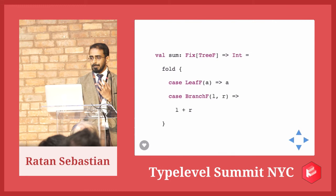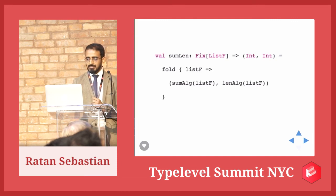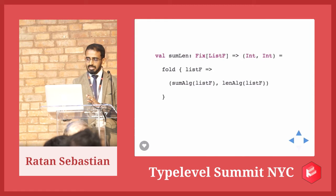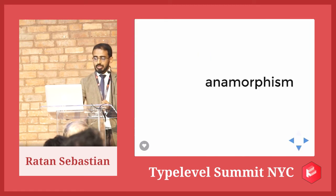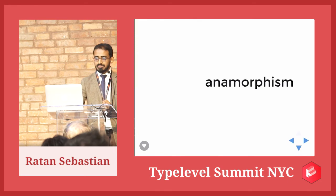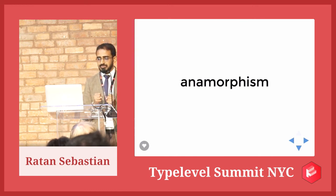Let's move on to some other kinds of recursion schemes. The anamorphism — 'ana' from the Greek meaning to build. This is a recursion scheme you want to use when implementing an algorithm that builds a recursive data structure. Let's define it as the opposite of a catamorphism: we're going to take the abstract definition of catamorphism, invert everything about it, and see what we come up with.